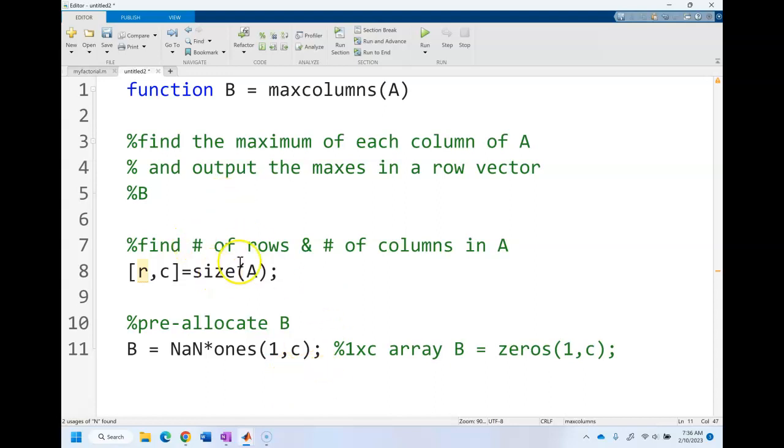We know how many rows, we've pre-allocated B, and now we need to fill in each column of B. Let's say that c maybe it's equal to five. So right now we have B equals not a number, not a number, and one more, five not a number.